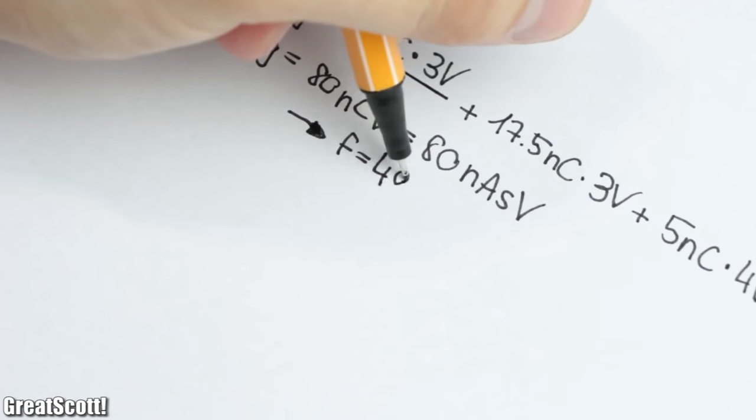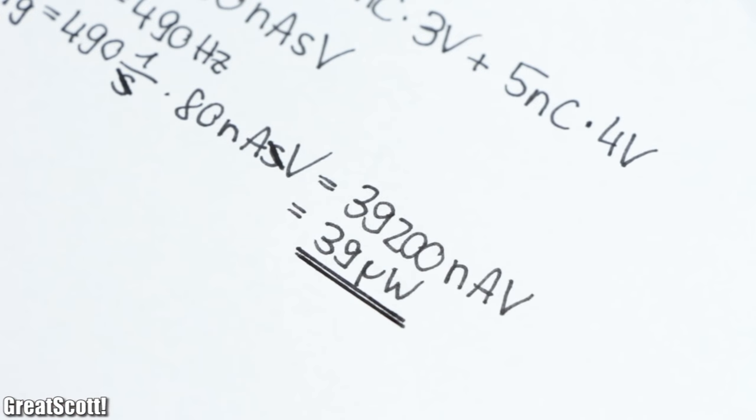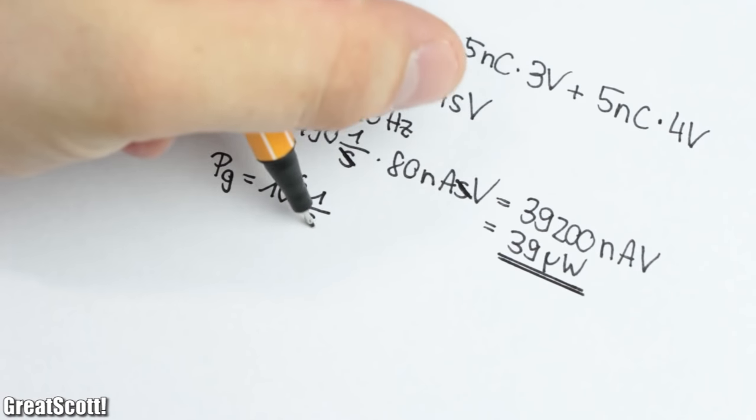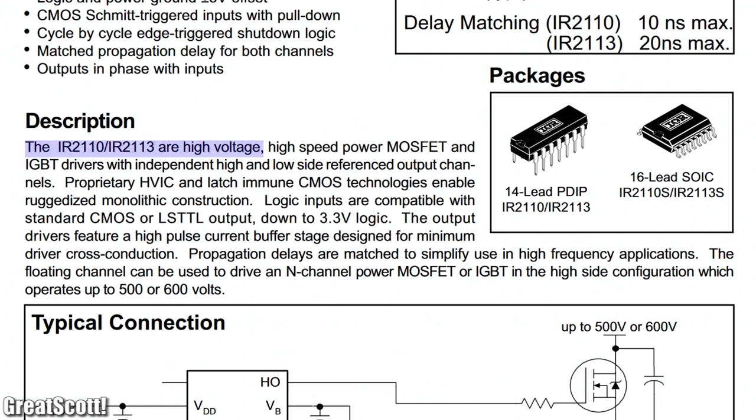But with a low frequency like 490 Hertz of the Arduino, they are almost unnoticeable. But on the other hand, with a frequency of 1 megahertz, we have switching losses of 80 milliwatts. So all in all, MOSFET driver ICs can make your life easier.